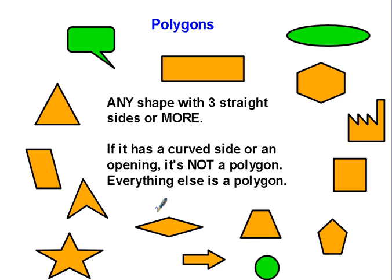So what's a polygon? A polygon is any shape with three straight sides or more. If it has a curved side or an opening, it's not a polygon. Everything else is a polygon. So we're gonna mark the polygons here.